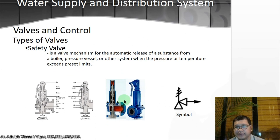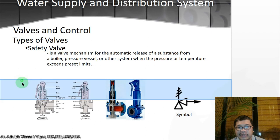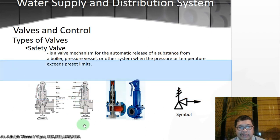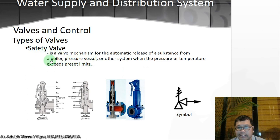Then you have the safety valve — a valve mechanism for the automatic release of a substance from a boiler, pressure vessel, or other system when the pressure or temperature exceeds preset limits. The keyword here is: safety valve activates when it exceeds preset limits.